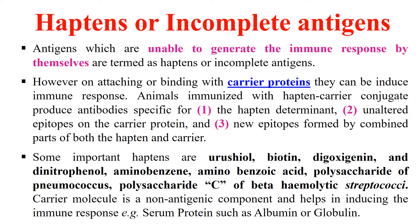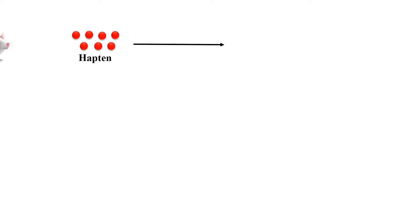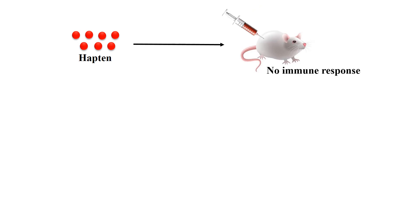In the next slide, we will learn about the mechanism of how haptens generally act. These red dots represent haptens, or weak antigens. When a hapten is injected into an organism — here we take the example of a mouse — if these haptens are injected into the mouse, there will be no immune response, because these are very weak antigens. Haptens cannot activate the immune response by themselves.